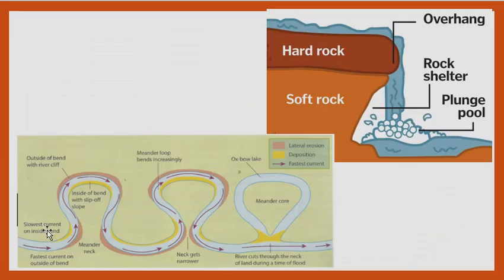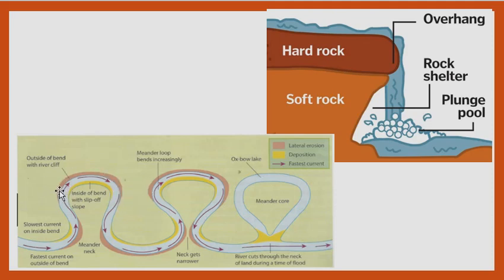In a meander, soil gets deposited on the inside of the bend. The meander neck — the narrow part between the two ends of the loop — comes closer and closer. During a flood, water flows straight across, cutting off the meander loop to form an oxbow lake. On the outer side, lateral erosion widens the bend; on the inner side, deposition occurs. Because of erosion outside and deposition inside, the river eventually cuts through and creates a meander lake.